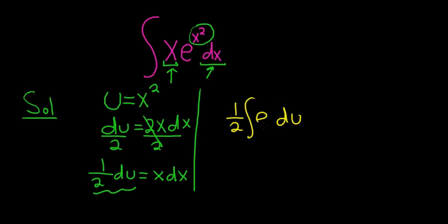And then we have e to the x squared. But we said x squared was u, so it's just e to the u.